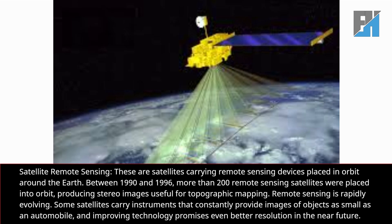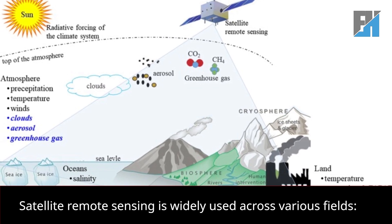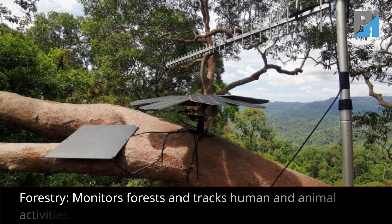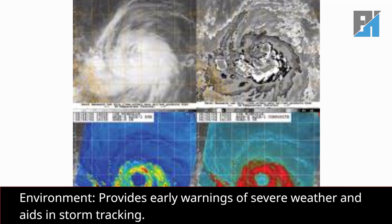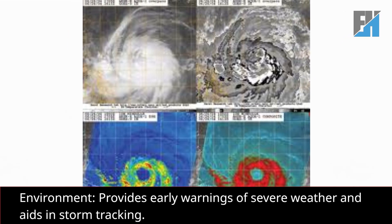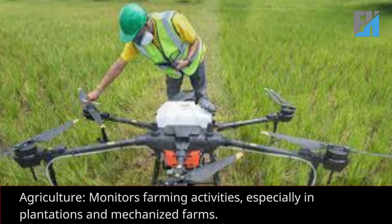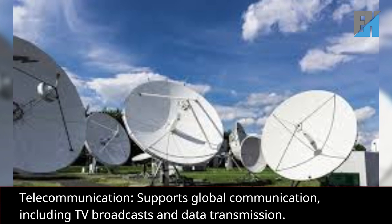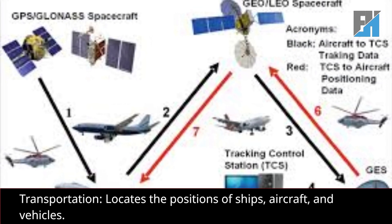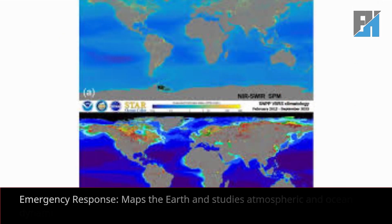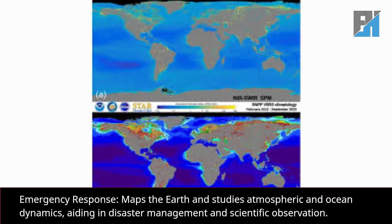Applications of satellite remote sensing: Satellite remote sensing is widely used across various fields. Forestry monitors forests and tracks human and animal activities. Environment provides early warnings of severe weather and aids in storm tracking. Agriculture monitors farming activities especially in plantations and mechanized farms. Telecommunication supports global communication including TV broadcasts and data transmission. Transportation locates the positions of ships, aircraft, and vehicles. Emergency response maps the earth and studies atmospheric and ocean dynamics, aiding in disaster management and scientific observation.